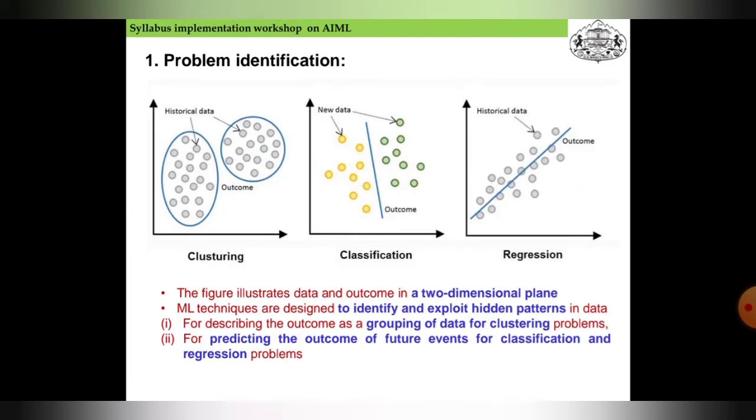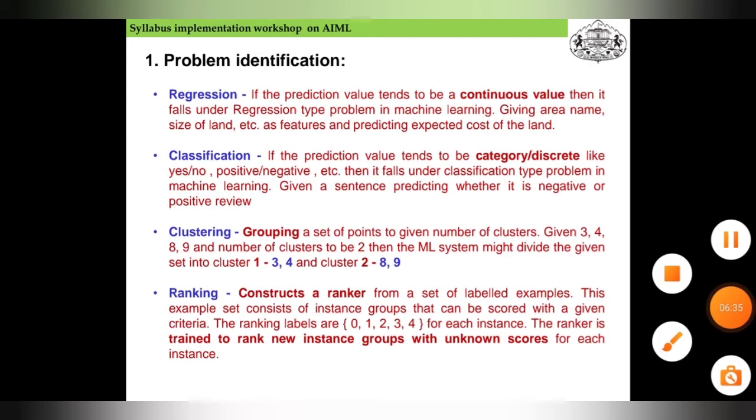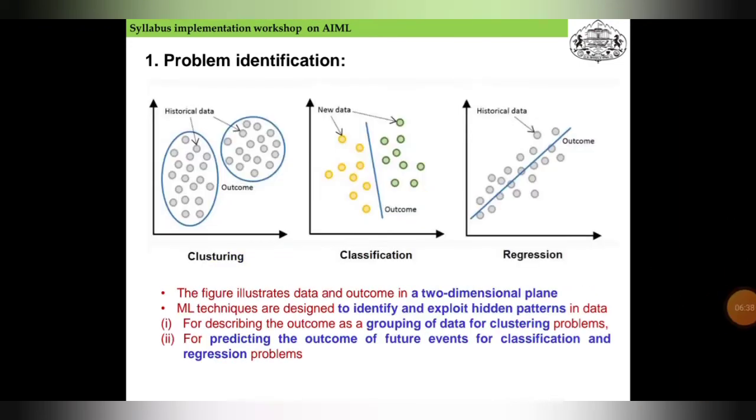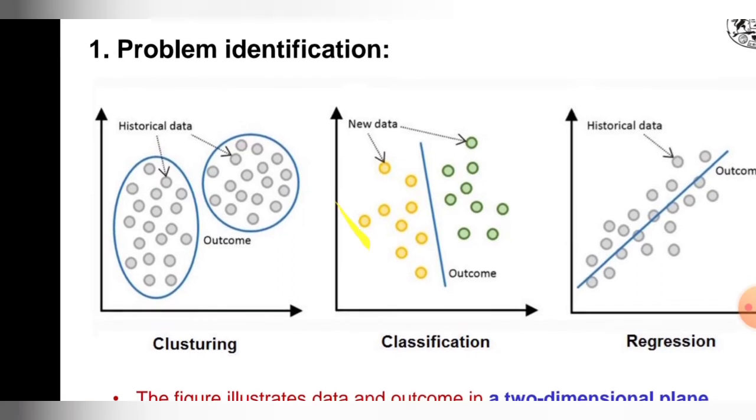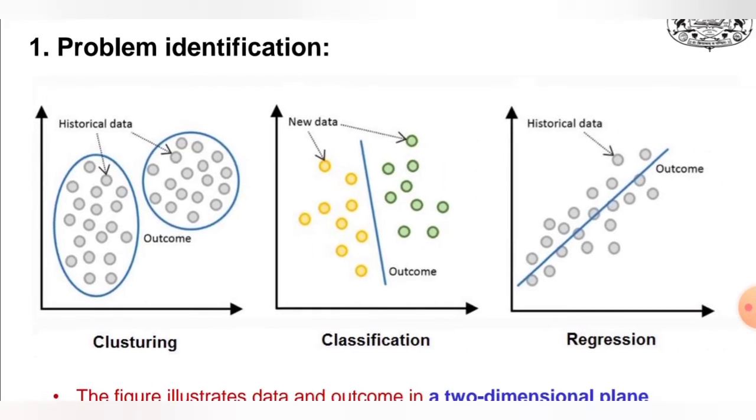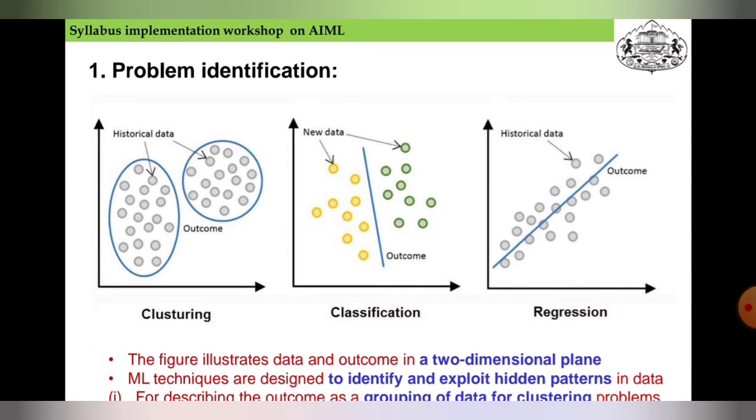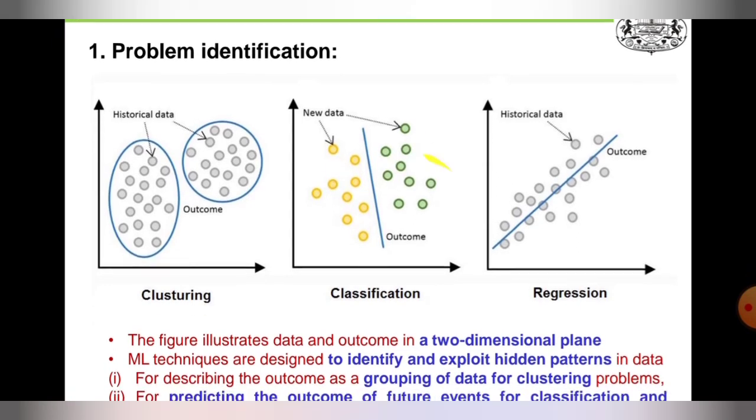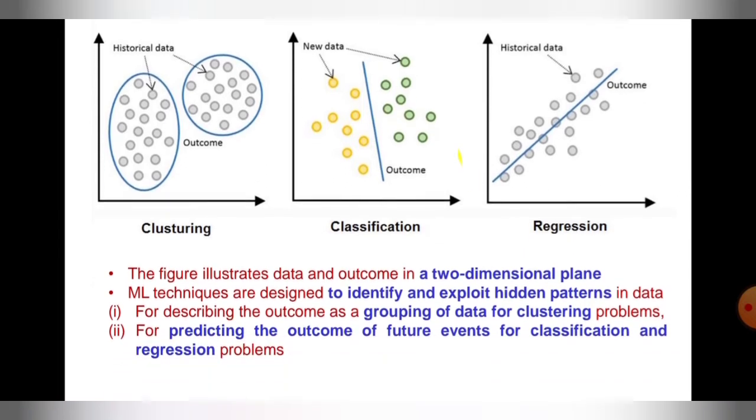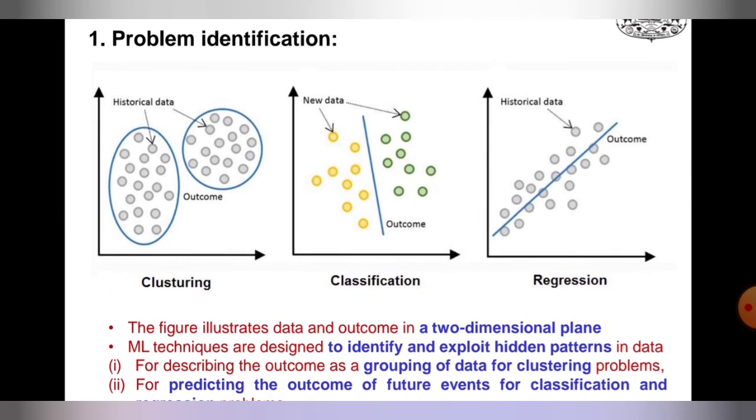Now the problem identification will be explained. Clustering is gathering data of similar type or historical data. Classification is when new data is separated by outcome, or merging new data produces an outcome. Regression uses historical data and the output.